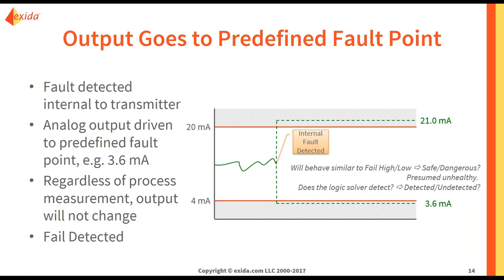In some cases, your output can go to a predefined fault point. If a fault is detected by the transmitter, the transmitter can then be programmed to drive the output to a predetermined value. We call this fail detected. However, whether it is classified as safe, dangerous, detected, or undetected depends on your application. The reason is because we don't know yet if your logic solver knows that your transmitter detected a failure. I will get into that more in a bit.